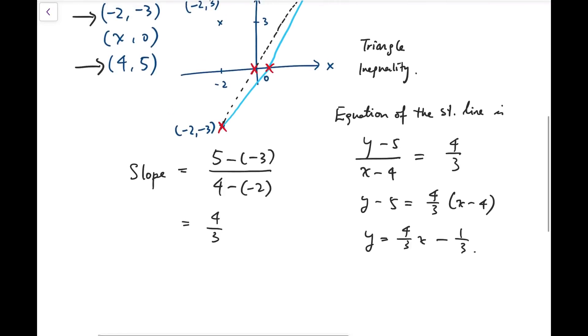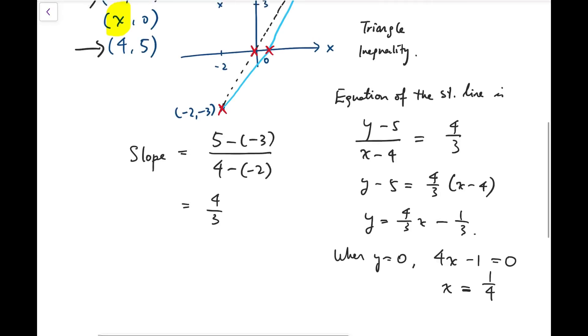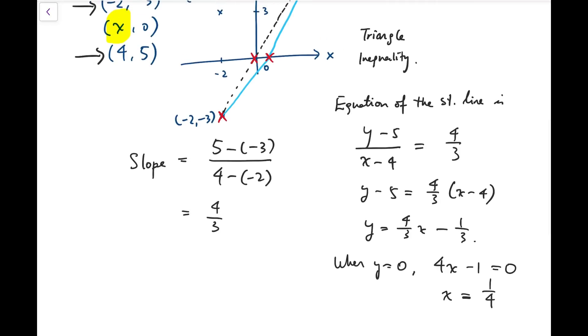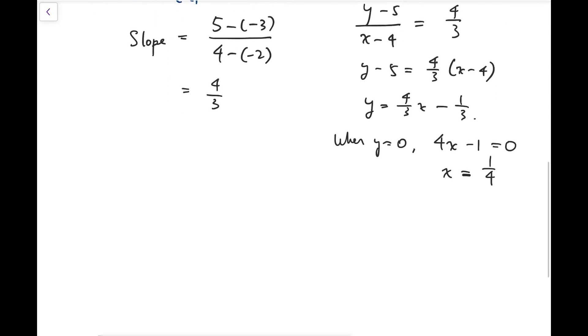And so it remains to solve for x. This unknown labeled in yellow at the top left corner of the screen. So when y is 0, 4x minus 1 equals 0. So x equals 1 over 4. So that means I'm going to achieve a straight line when I pick x to be 1 over 4. And that means the distance, the sum of the two distance, should take minimum when x equals 1 over 4.